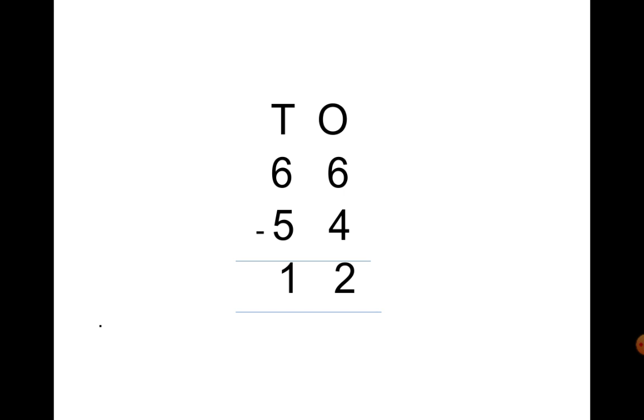Let's subtract 54 from 66. First, we will subtract the right column, the ones. 6 minus 4 equals 2. Next, subtract the left column, the tens. 6 minus 5 equals 1, and this way we have our answer, 12.